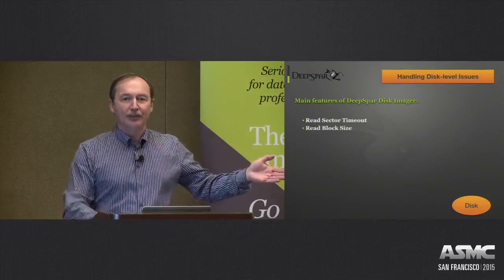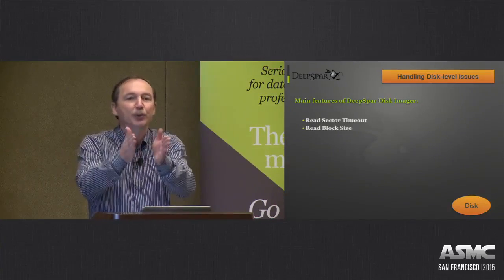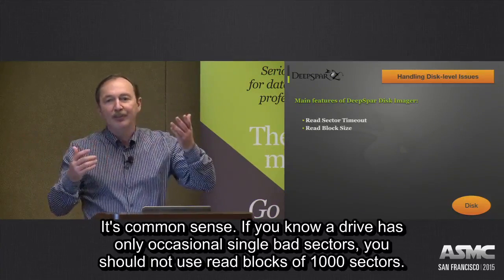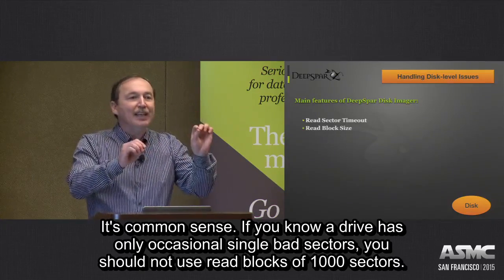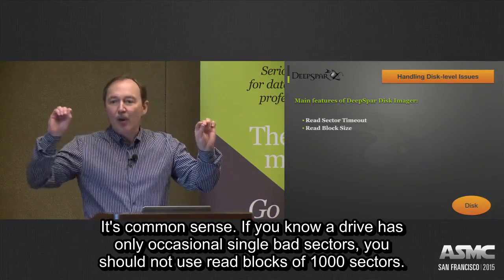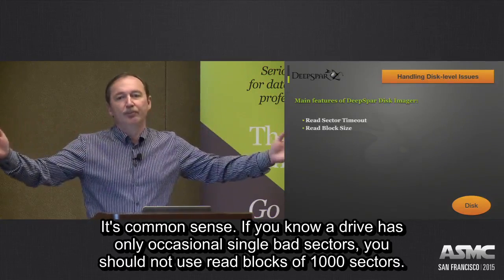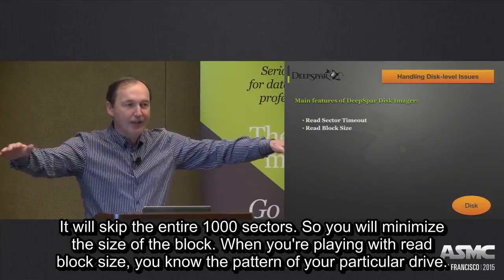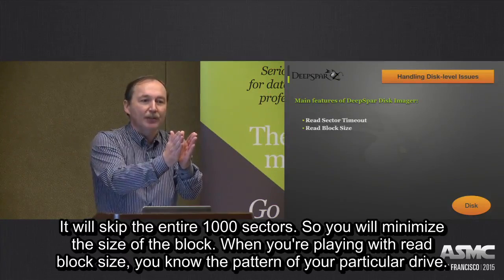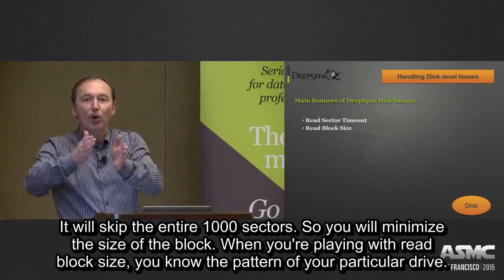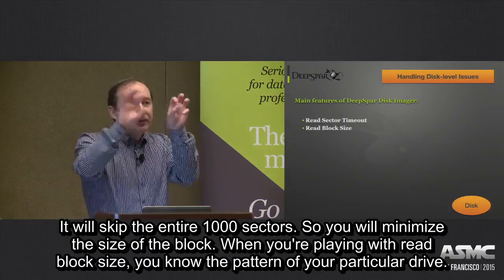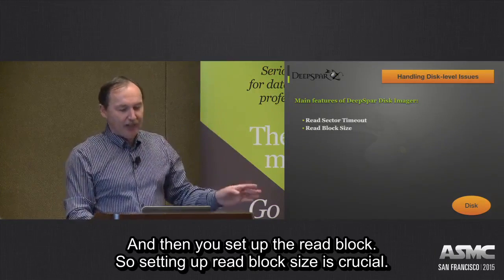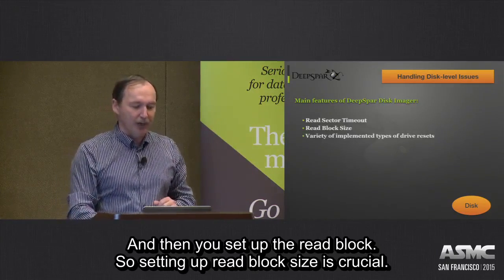The next thing is read block size. The imager always gives you the ability to set what read block you want to use, and it's common sense. If, let's say, you know that a drive has only occasional single bad sectors, you should not use read blocks like 1,000 sectors, because it will skip the entire 1,000 sectors. So you will minimize the size of the block. When you're playing with the read block size, you know the pattern that usually goes for this particular drive, and then you set that read block. Setting read block size is quite crucial.